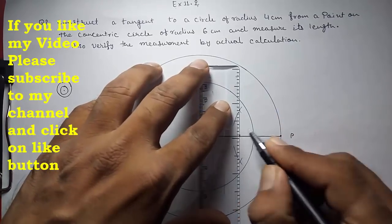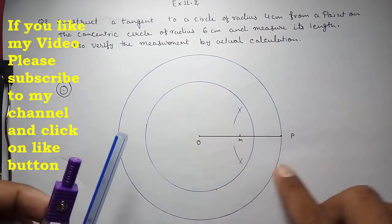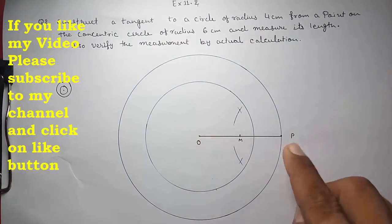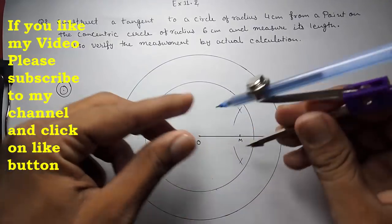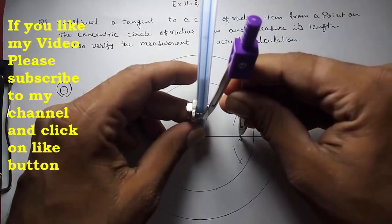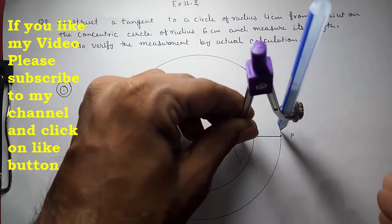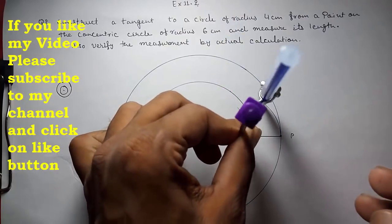So this will be our midpoint M. Now with the help of this midpoint we are going to draw a circle passing from O and P, taking OM as the radius. Look here. And here also it should intersect on P. Yes it is intersecting. So let us draw.